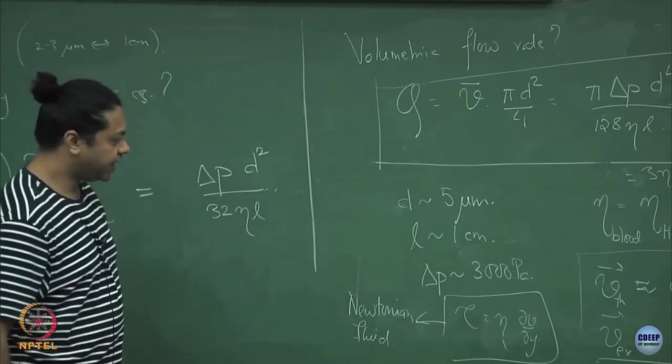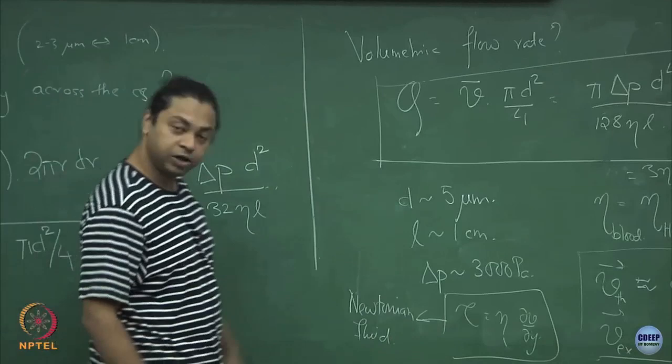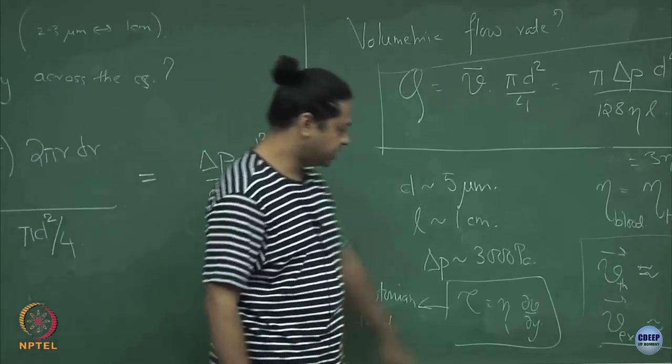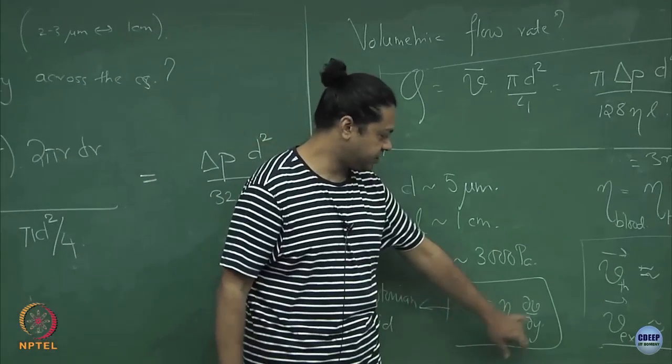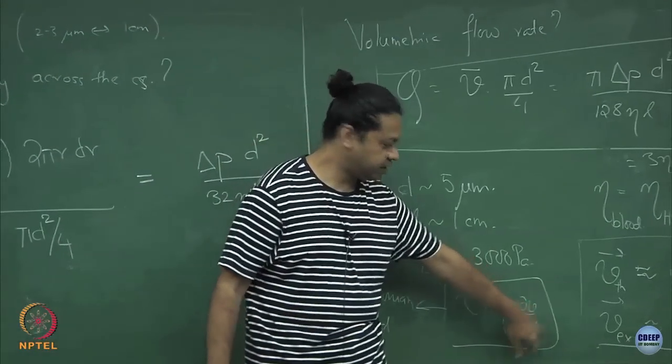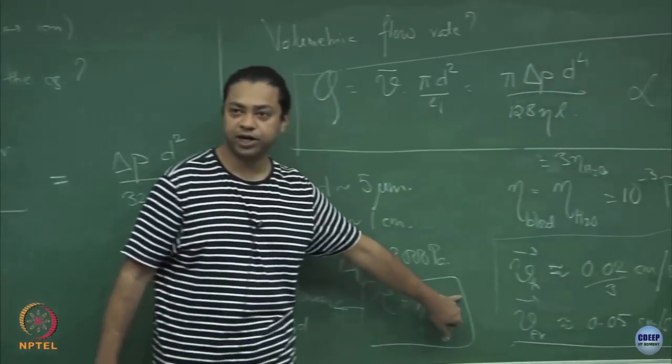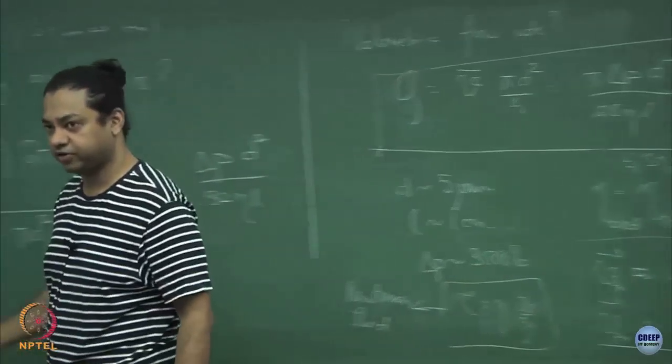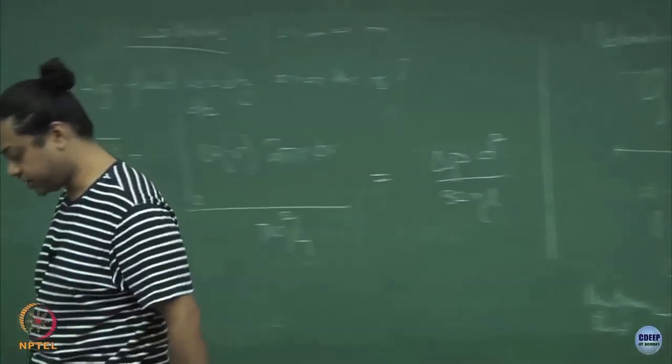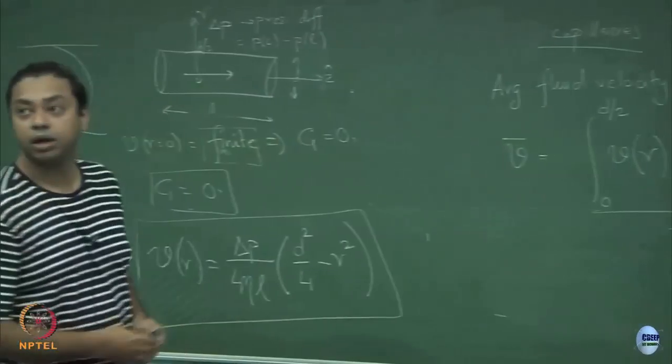For non-Newtonian fluids like shear-thinning or shear-thickening, there would be an exponent n in the stress-strain relation, which would be greater than or less than 1 depending on the type of fluid.